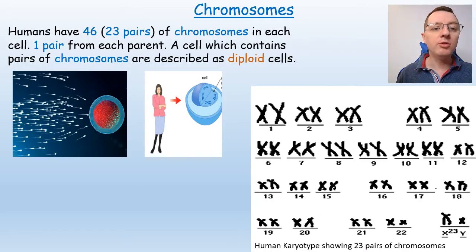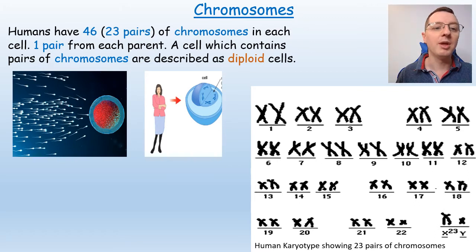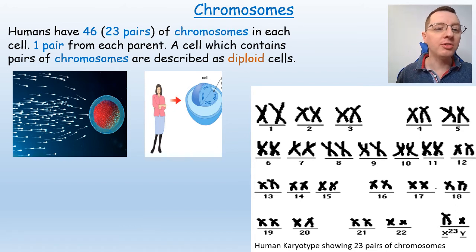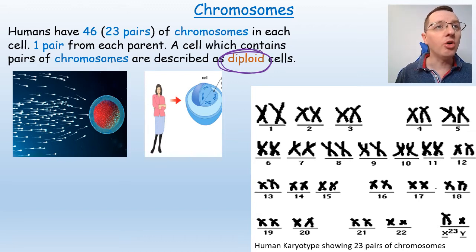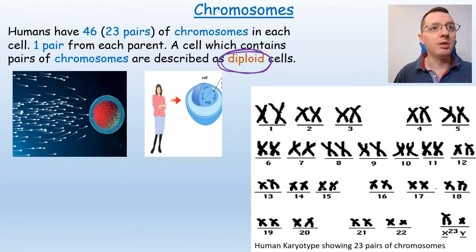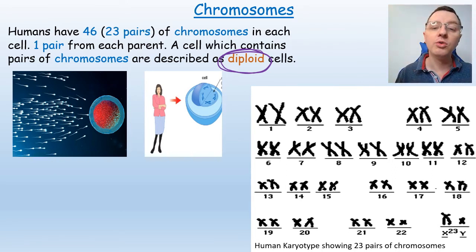Humans have 46, or 23 pairs of chromosomes in each cell — one pair from each parent. A cell which contains pairs of chromosomes is described as being diploid. In humans almost all our cells are diploid: nerve cells, liver cells, skin cells, and muscle cells are all diploid.